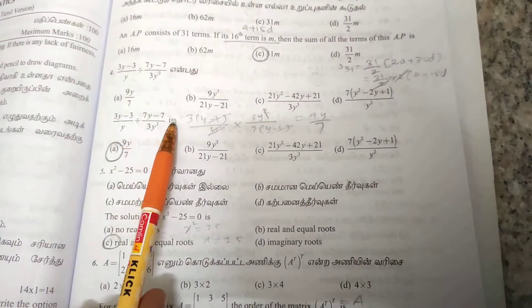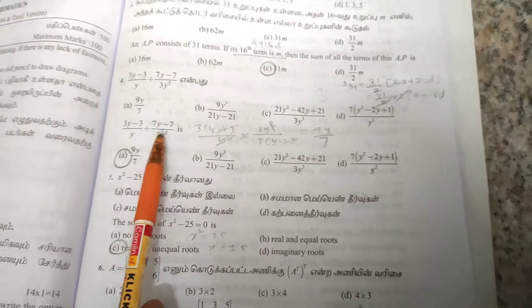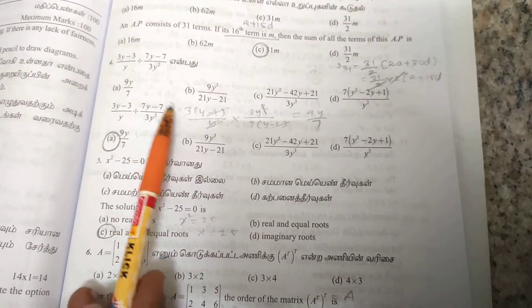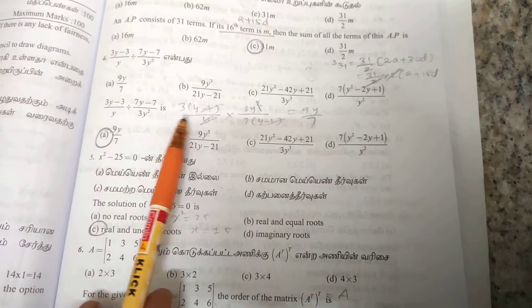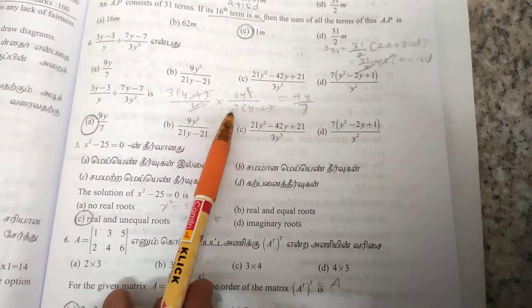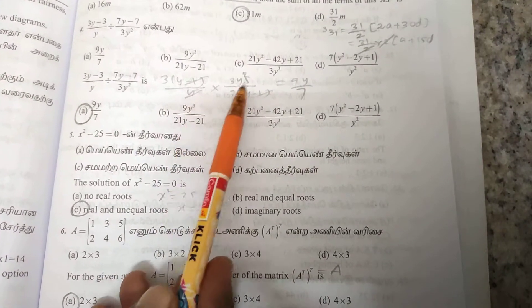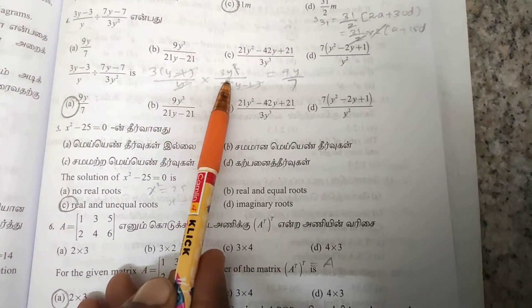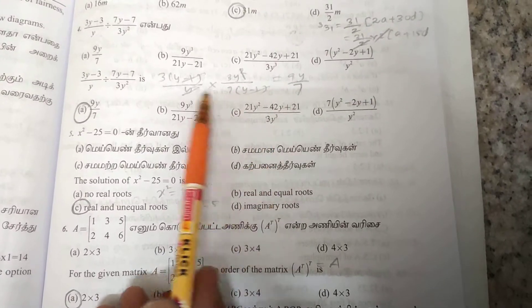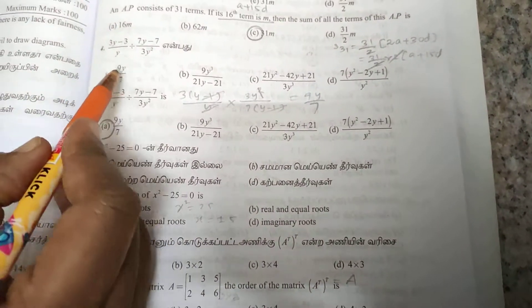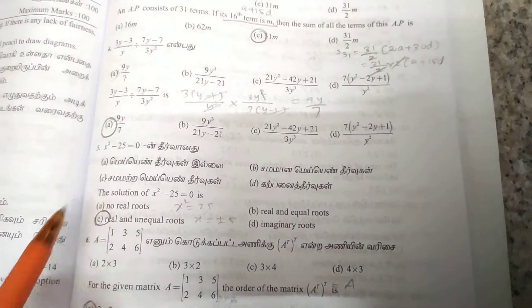This one is a book back question. We have to divide the fraction. The two terms are common, giving (y-1)/y times 3y²/7. Simplifying: y minus (y-1) in the denominator gives 1, so we get 3y²/7y, which equals 3y/7. Option A is correct.